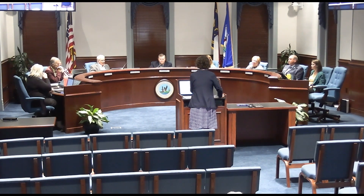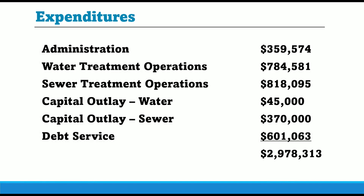Expenditures within the Ocean Sands Water and Sewer District this year include administration at a cost of $359,574. There is $45,000 recommended for capital outlay in water and $370,000 recommended for capital outlay in sewer, along with debt service payments for the plants. The total fund request this year is $2.9 million.